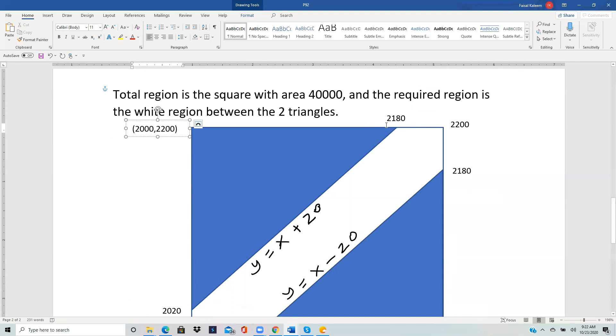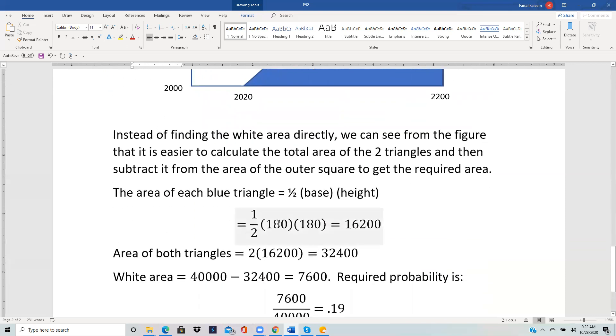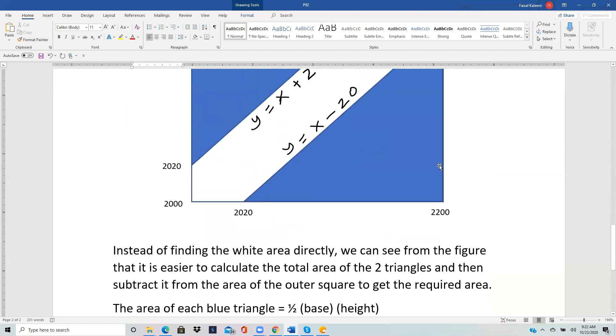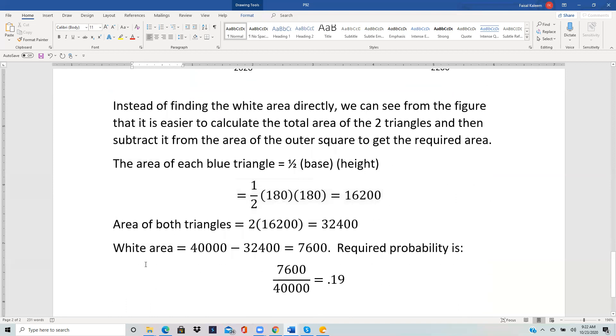The base length: X is 2000 here and 2180 here, so that's 180. The height was also 180, so the area of this triangle will be half times 180 times 180, which is 16,200. The lower triangle is exactly the same, so the total area of both triangles would be two times 16,200, which is 32,400.